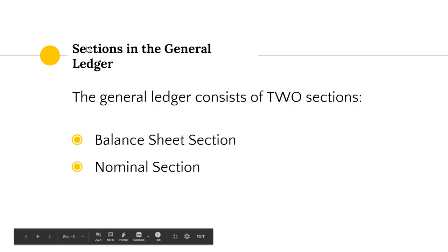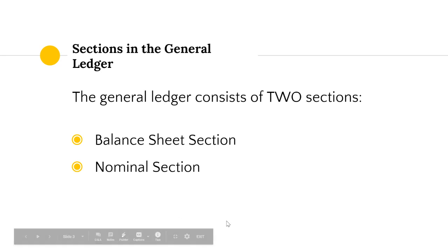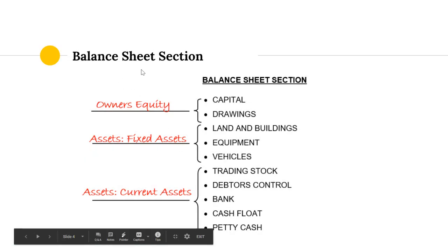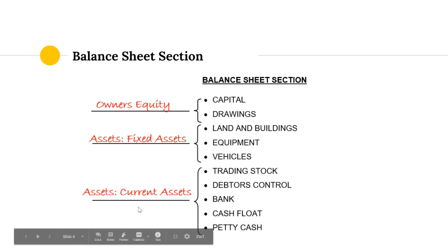There are two sections in the general ledger: the balance sheet section comes first and the nominal section comes last. The balance sheet section consists of assets owned by the business and the two owners' equity accounts — capital and drawings. We start with capital and drawings, then move to fixed assets: land and buildings, equipment, and vehicles.